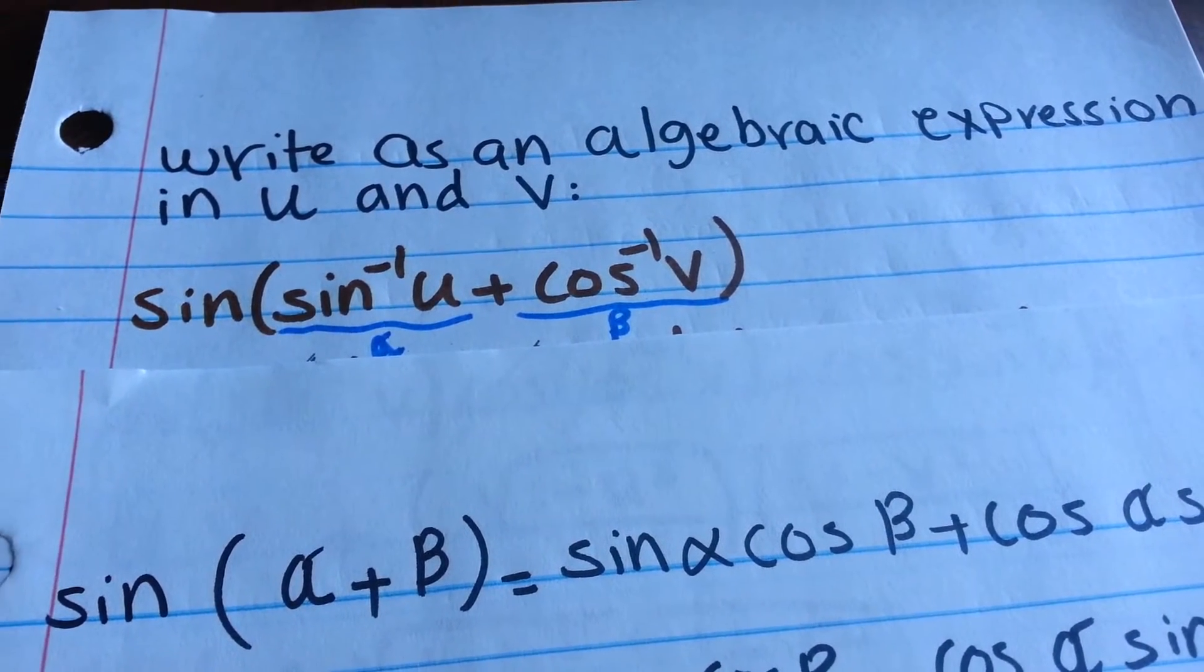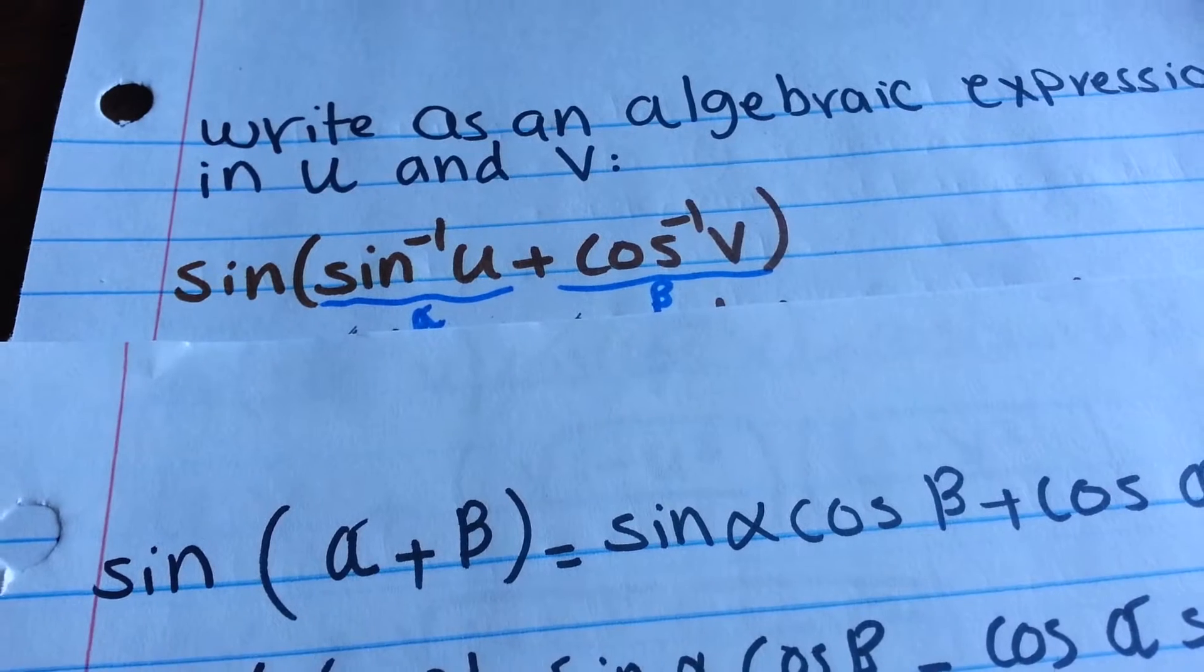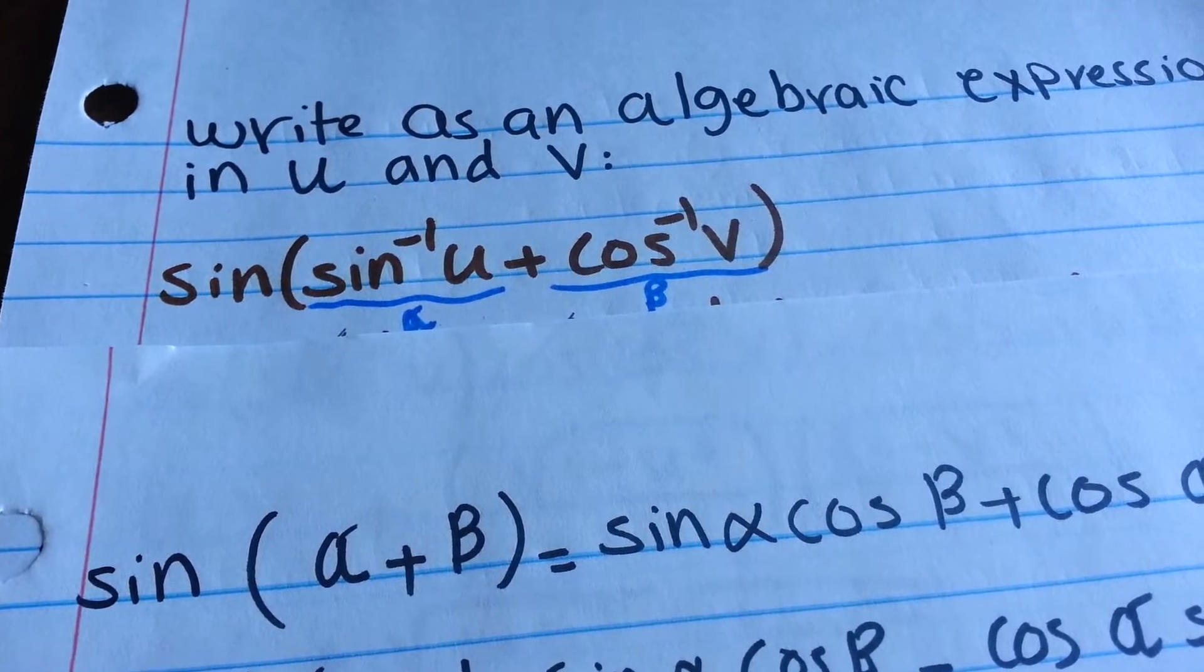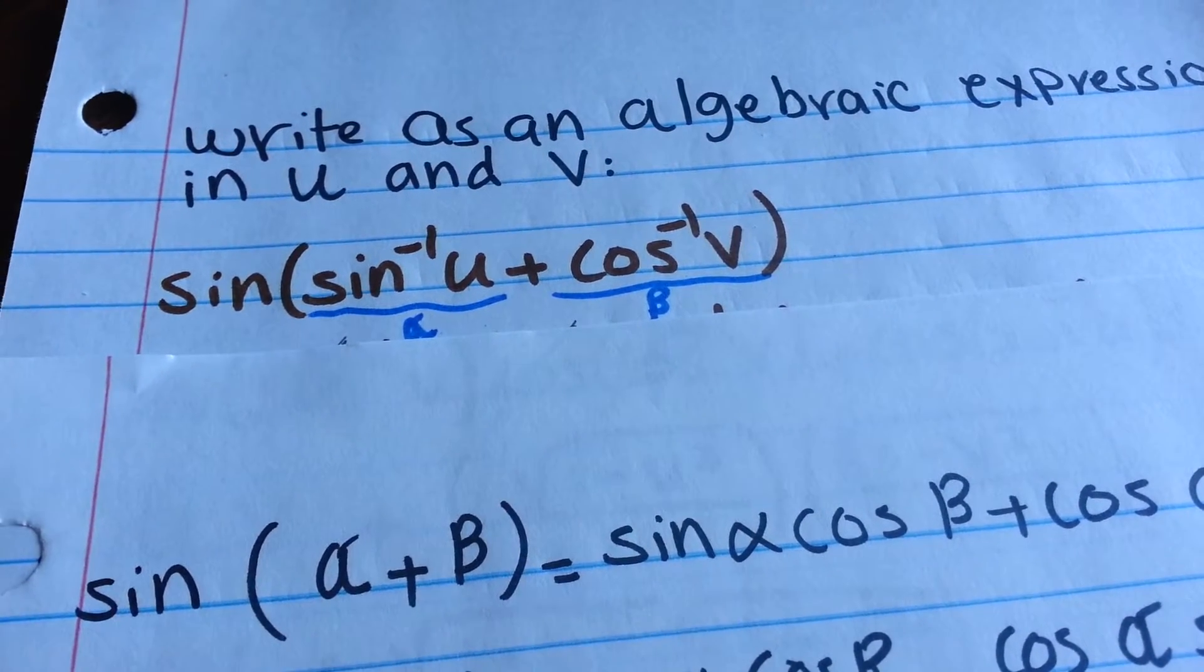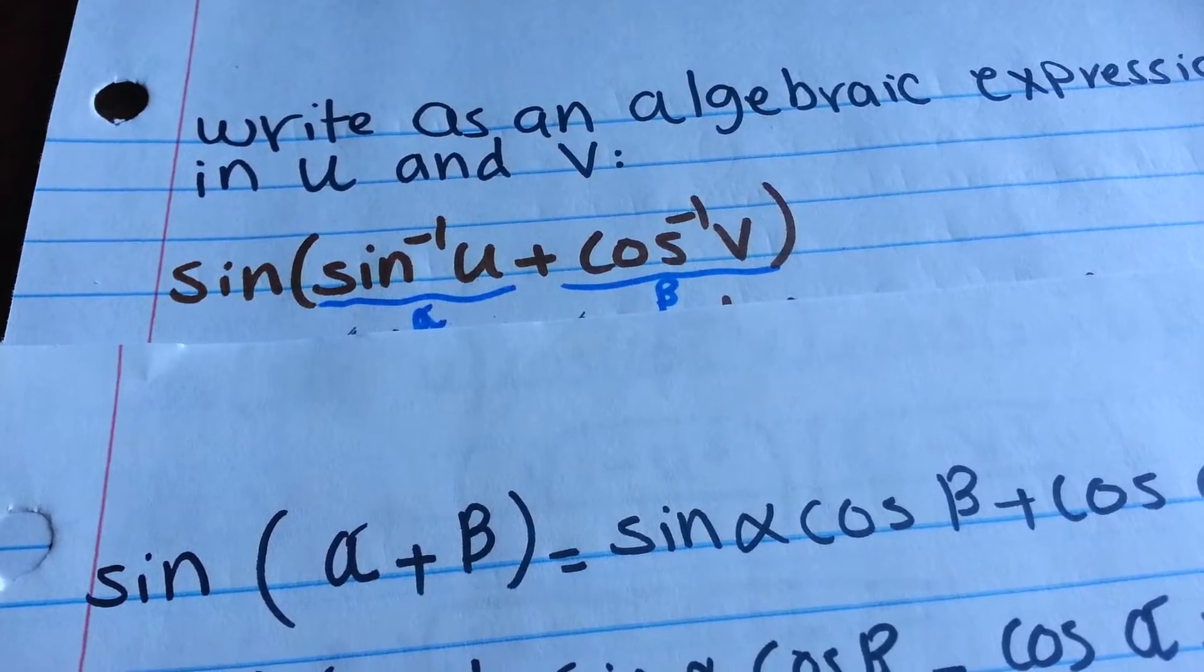Write as an algebraic expression in u and v. My equation says sine multiplied by inverse sine u plus inverse cosine v.